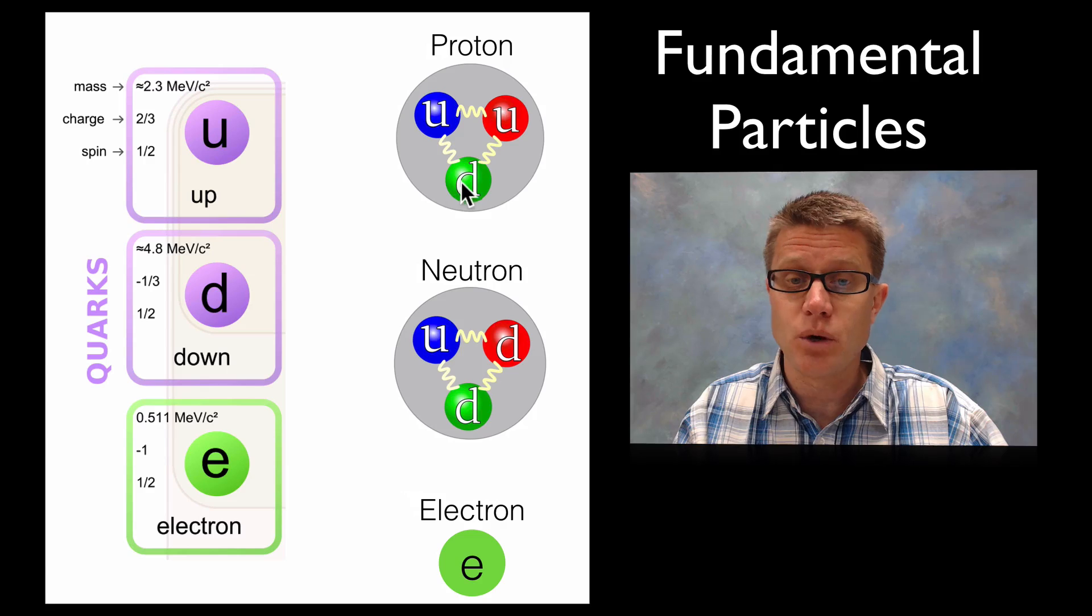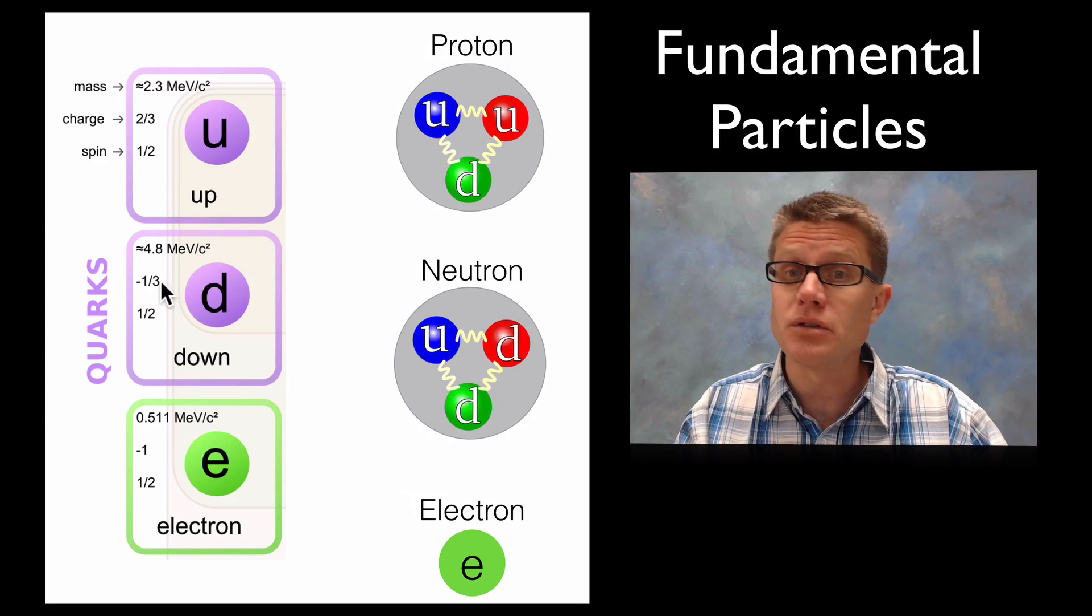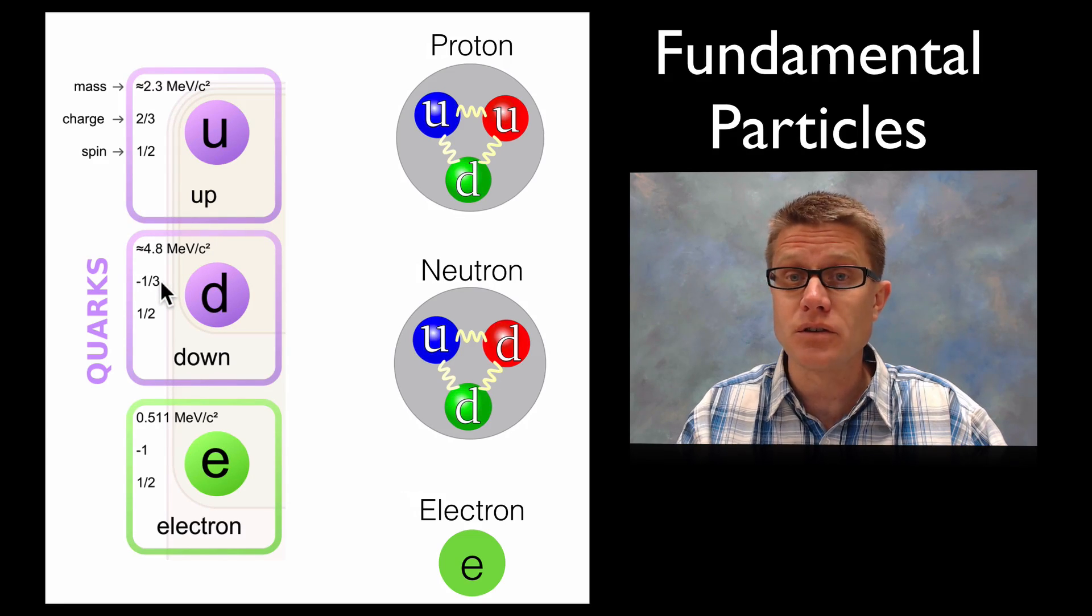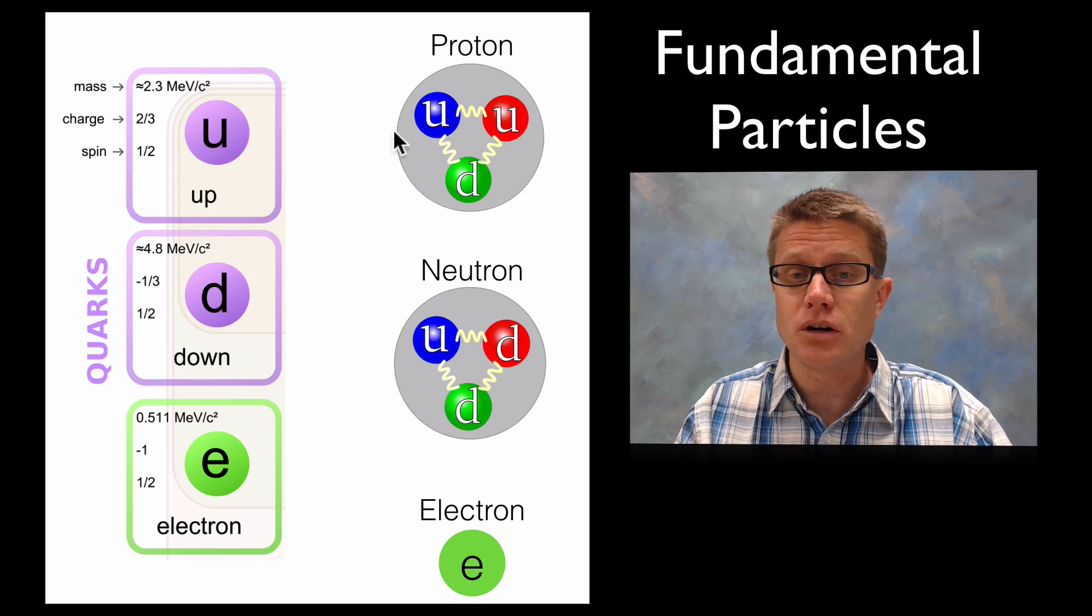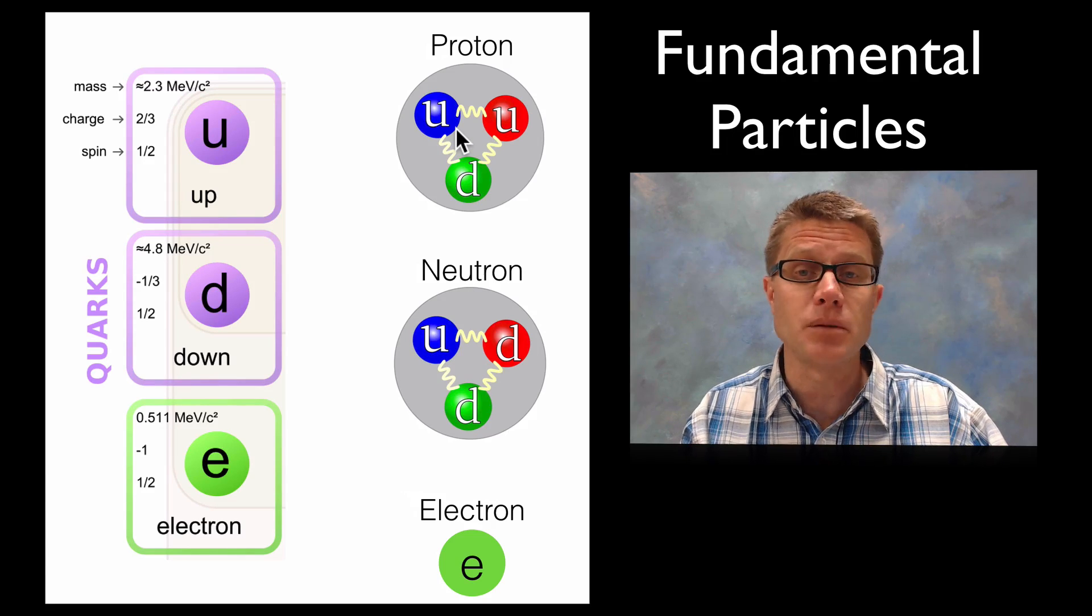And then I am going to subtract the charge of one down quark, which is going to be four thirds minus a third. I get three thirds or a positive one charge of a proton. It is coming from those fundamental particles.